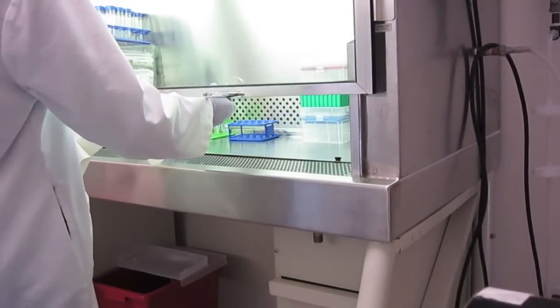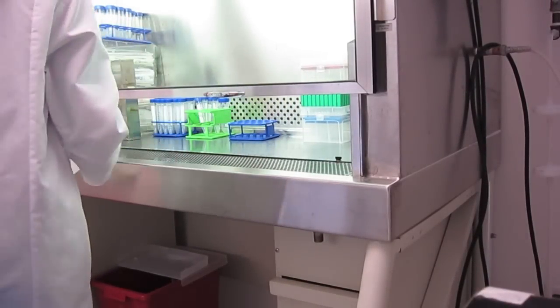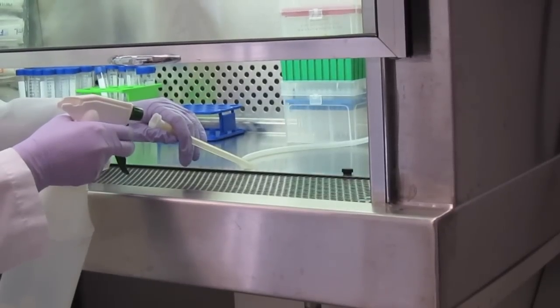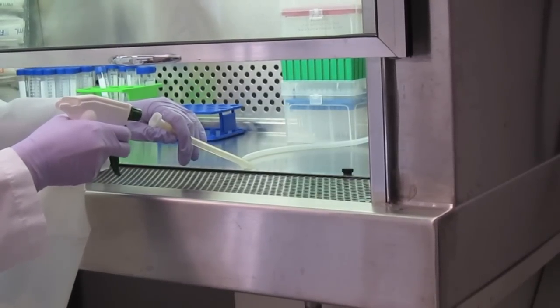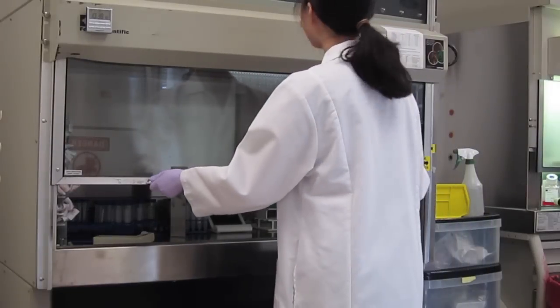When you are finished with your work in the BSC, spray down all surfaces with 70% ethanol. Spray down the vacuum lining with ethanol as well and straighten out prior to turning off the vacuum. Turn off the lights, blower, and close the glass panel.